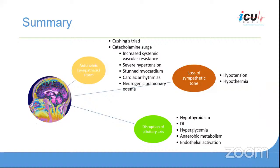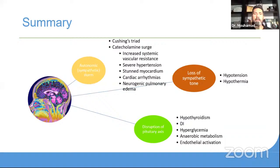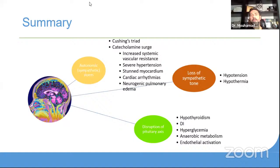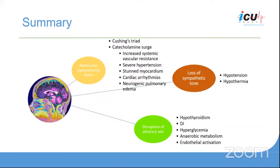Dr. Zainab concludes her talk. In the Q&A, the question is raised whether diabetic and hypertensive patients can donate organs. The answer is that it depends on the status of the organs and the presence of other contraindications. Diabetes or hypertension alone will probably not be a contraindication for organ donation, especially if the organs are in good state and there are no other contraindications. Brain death is really a multi-organ failure requiring management of each organ system.